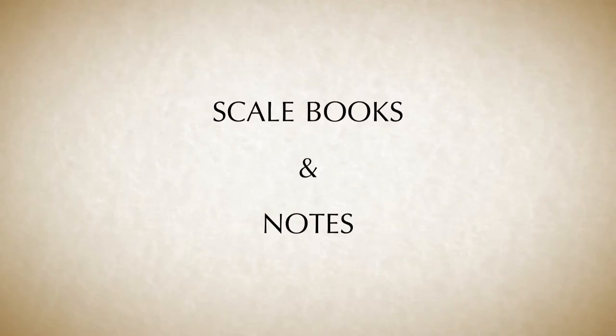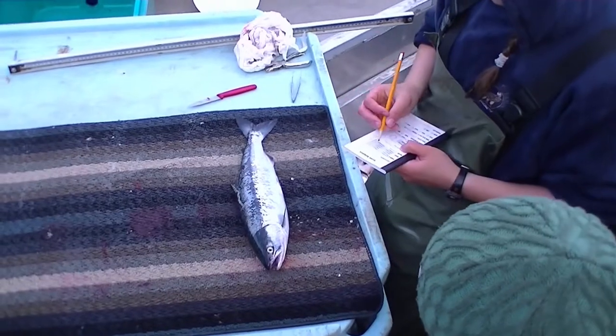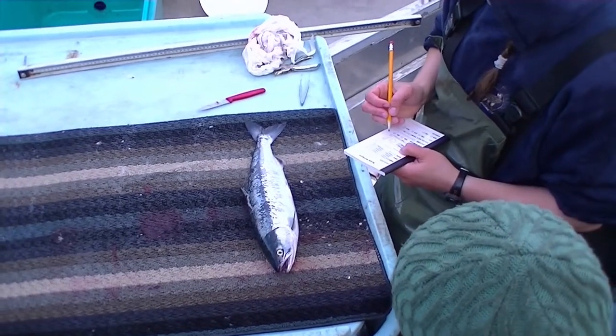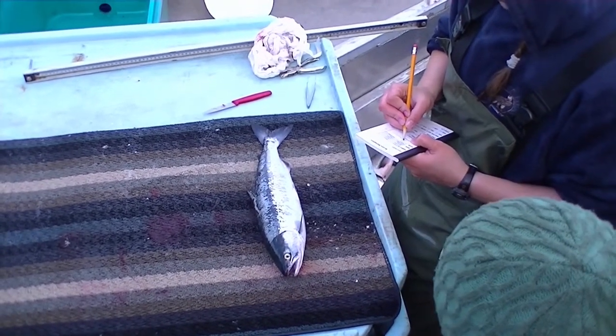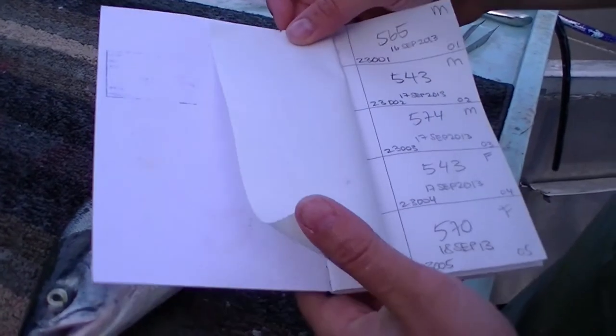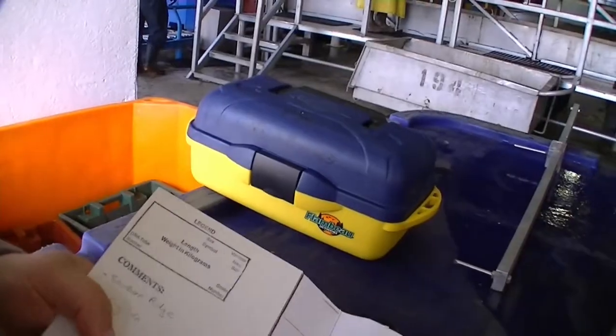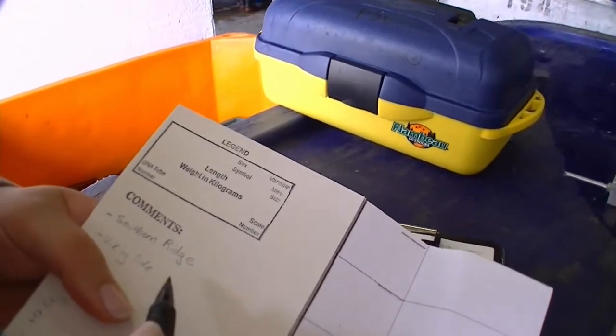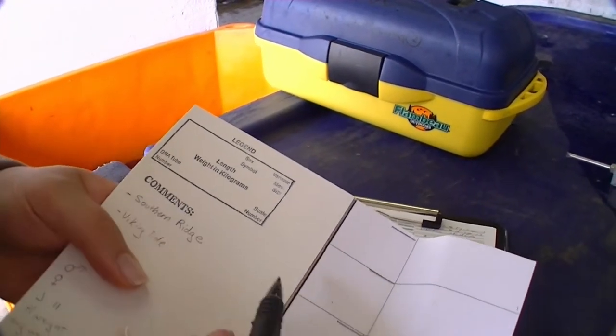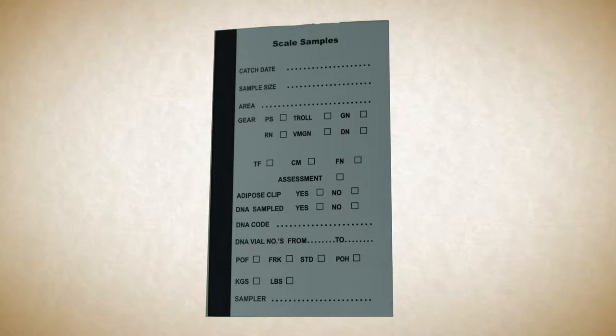Just as important as proper measurement and collection technique is legible and accurate recording of data. When collecting matched DNA and scale samples, information will generally be recorded in a scale book. It is important to be consistent with how information is entered into the scale book, using the same units for length and weight throughout. The first page of the book should include a legend that shows the location of each entered piece of information, as well as the units used. The cover page of the scale book should include information on the origin and contents of the sample collection, such as the catch date and location.